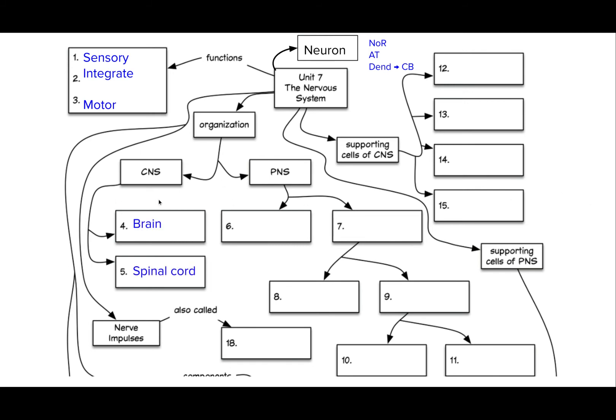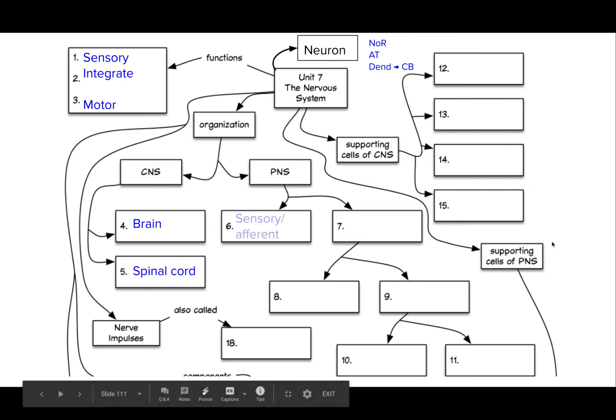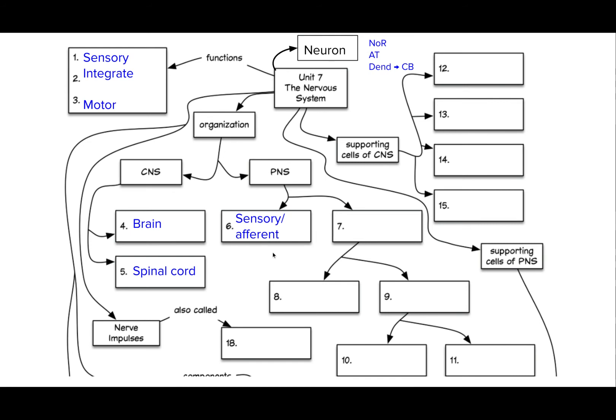Moving on here on number four and five. So the organization of our nervous system, it's broken into the central nervous system and peripheral nervous system. The central nervous system is divided into your brain and spinal cord. That's all that's central about your central nervous system. Your peripheral nervous system is broken down a little bit more. So you have nerves that are the sensory or afferent nerves. You have those nerves that are the motor or efferent nerves.